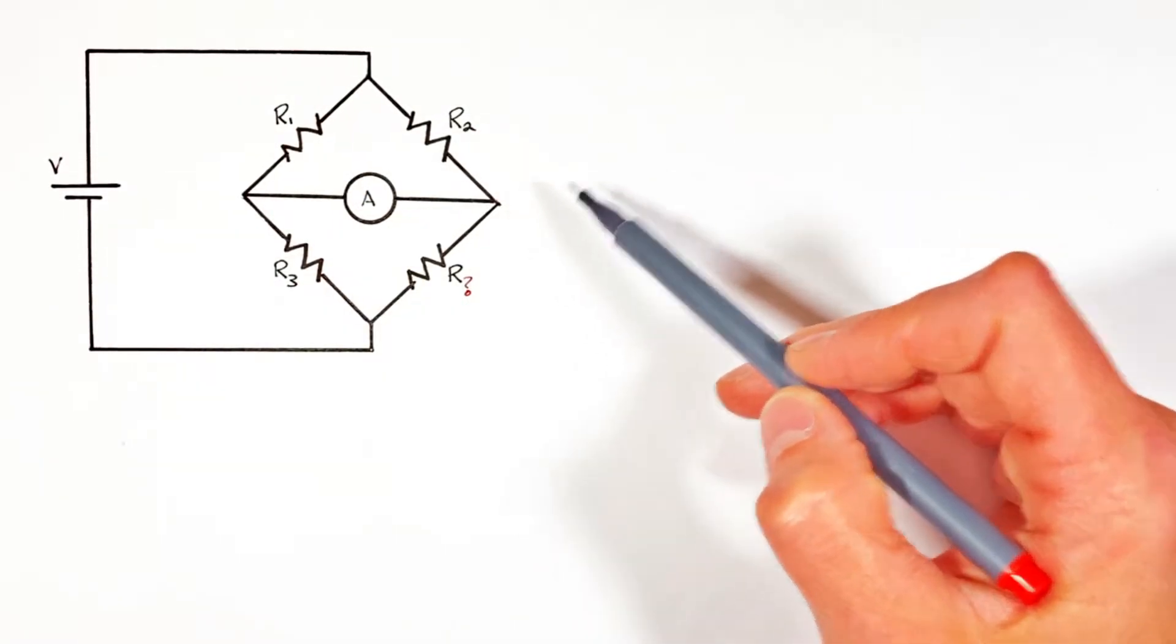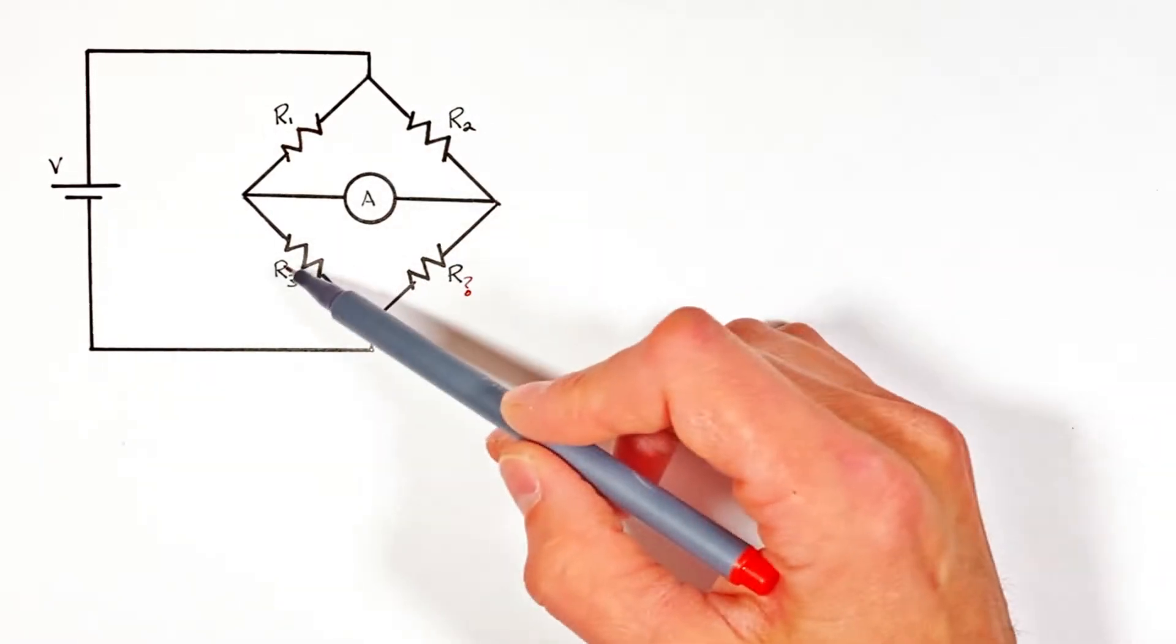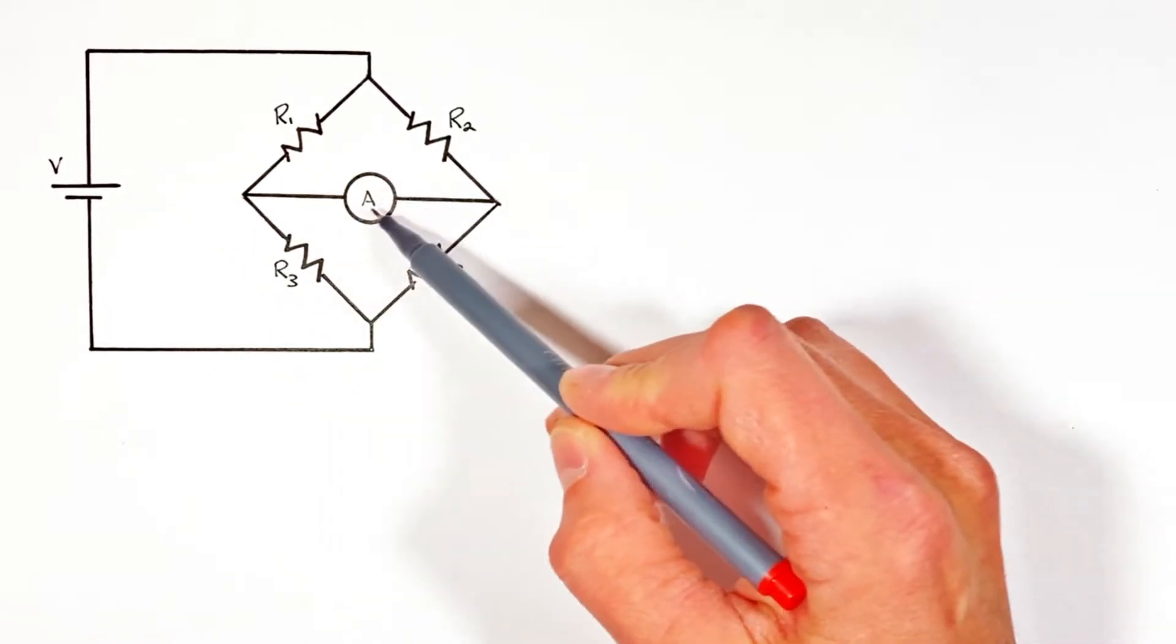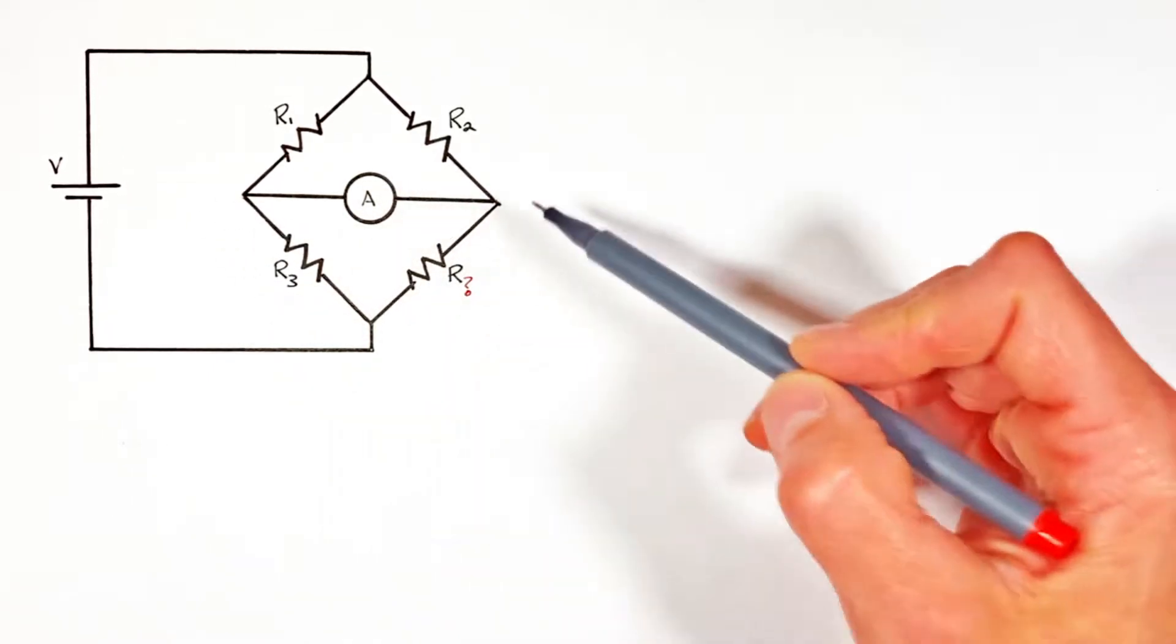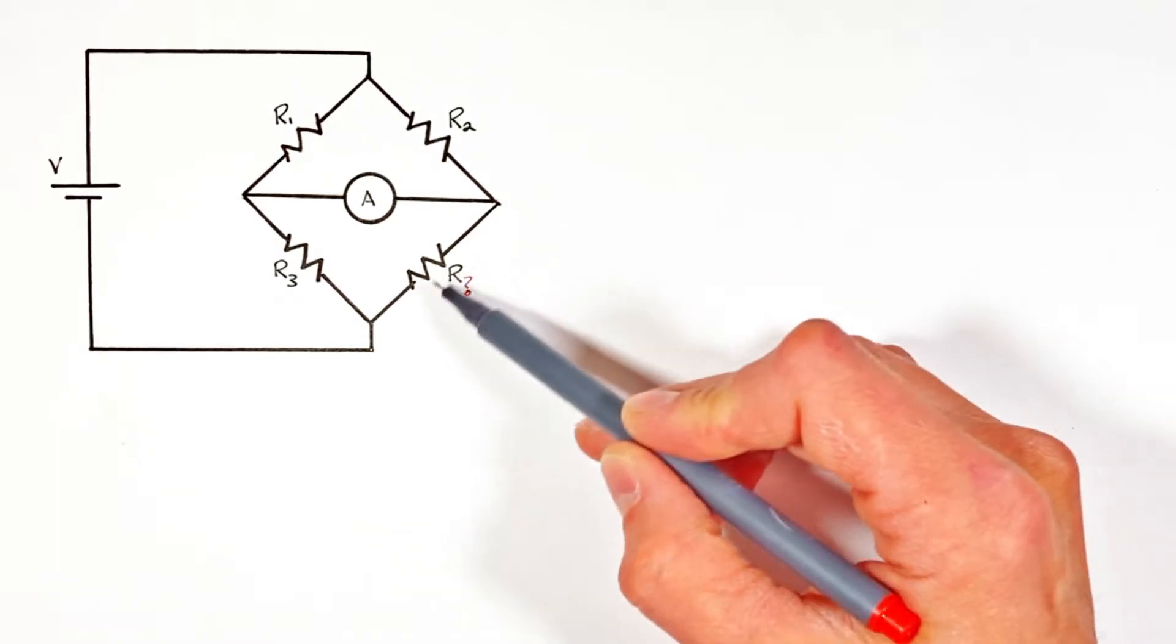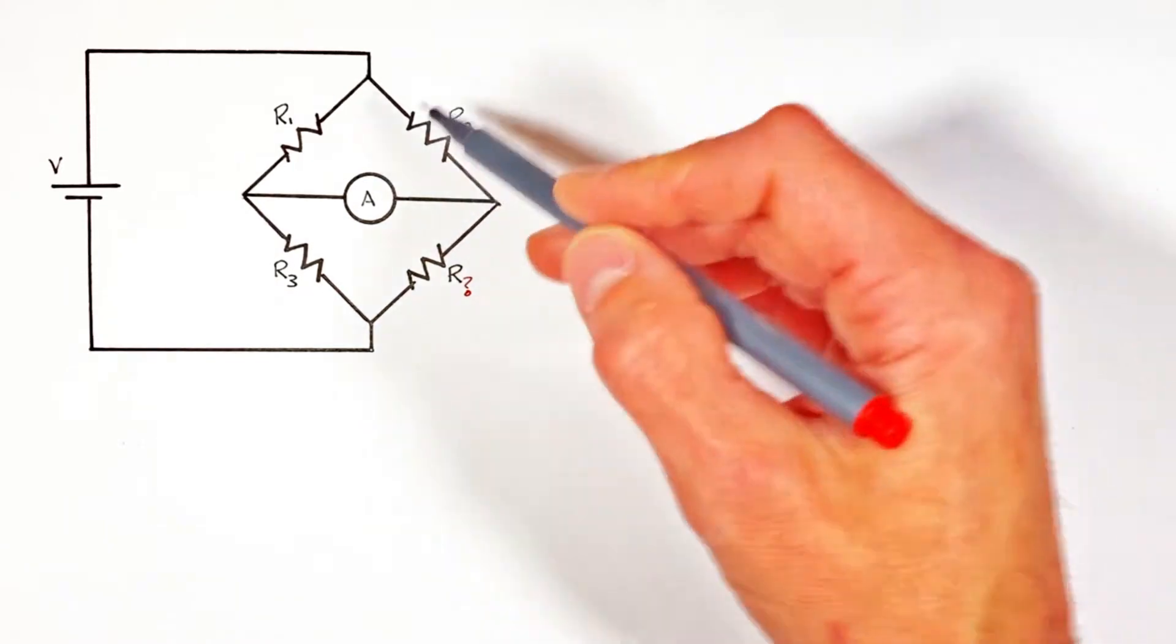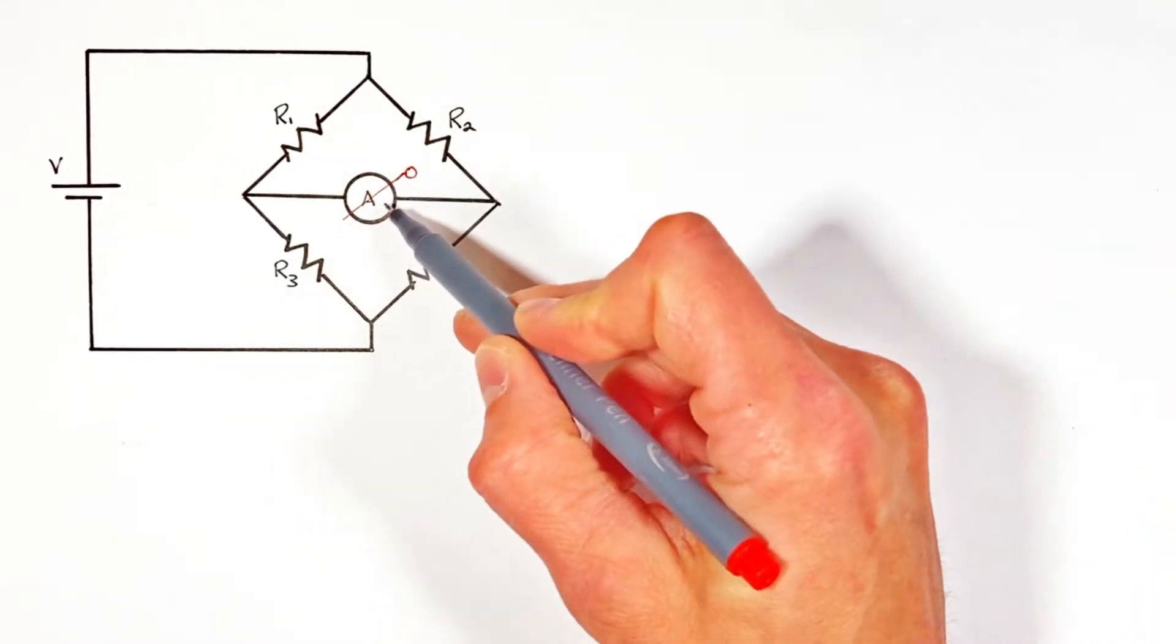Alright YouTube, today we're taking a look at a Wheatstone bridge which is made up of four different resistors and then a bridge, in this case which is actually made up of an ammeter. What we're going to do today is solve for the resistance in this variable resistor such that there will be no current through the ammeter.